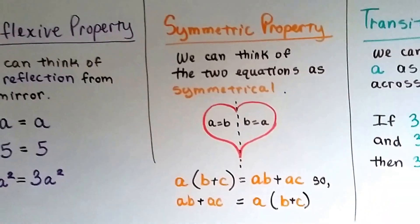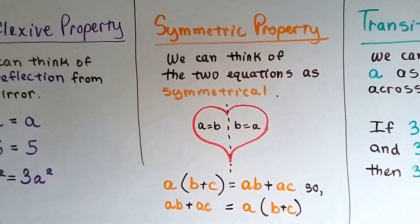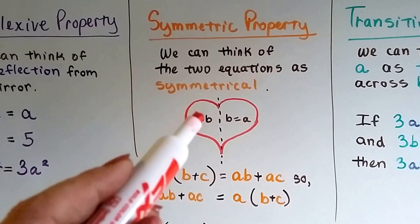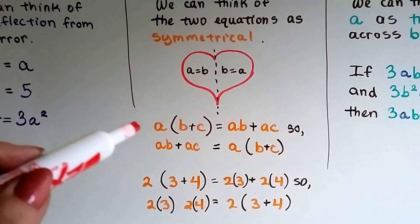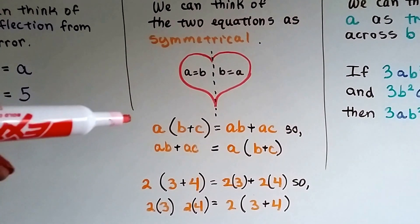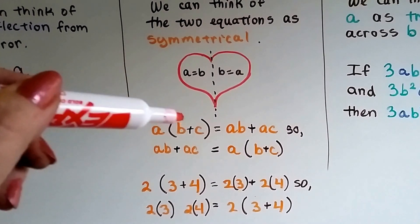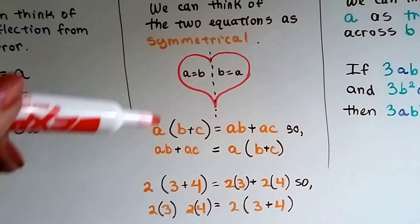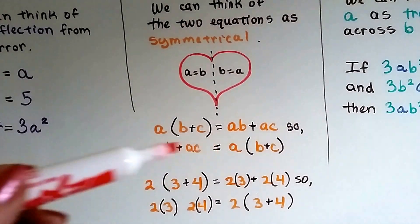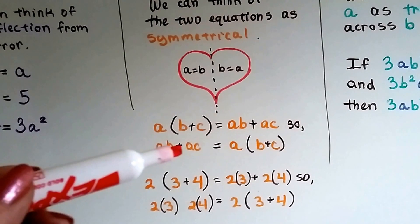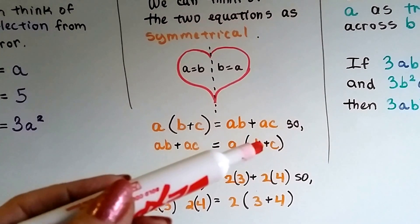The symmetric property, we can think of two equations as symmetrical. a equals b, b equals a. And with the distributive property and with factoring, a times b plus c is equal to a times b plus a times c. So that means it's the other way around also. a times b plus a times c is equal to a times b plus c.